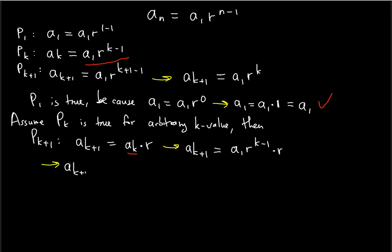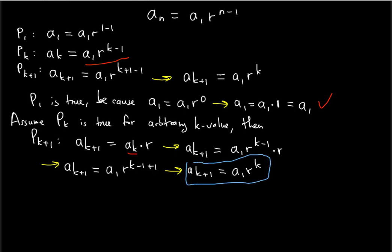That tells us a_{k+1} equals a_1 times r, and we combine the r bases by adding their powers: k minus 1 plus 1, because r is to the first power. So we can simplify: a_{k+1} is equal to a_1 times r to the k. We just showed that the Pk+1 statement holds true — a_{k+1} equals a_1 times r to the k — on the assumption that Pk is true.